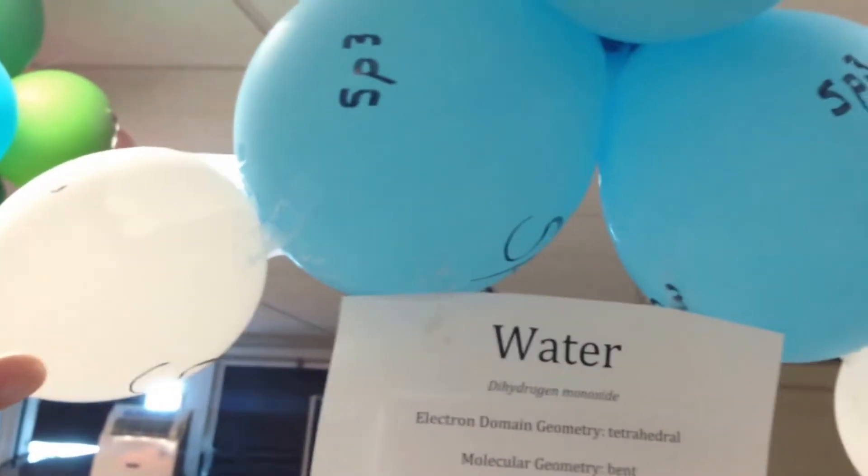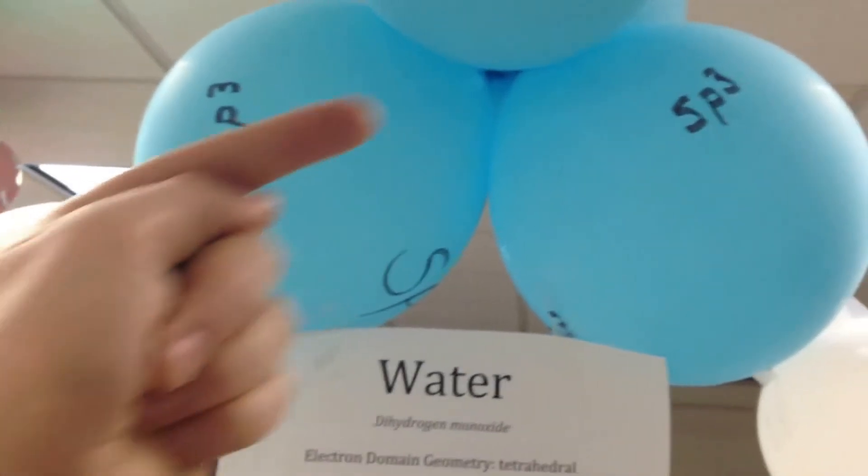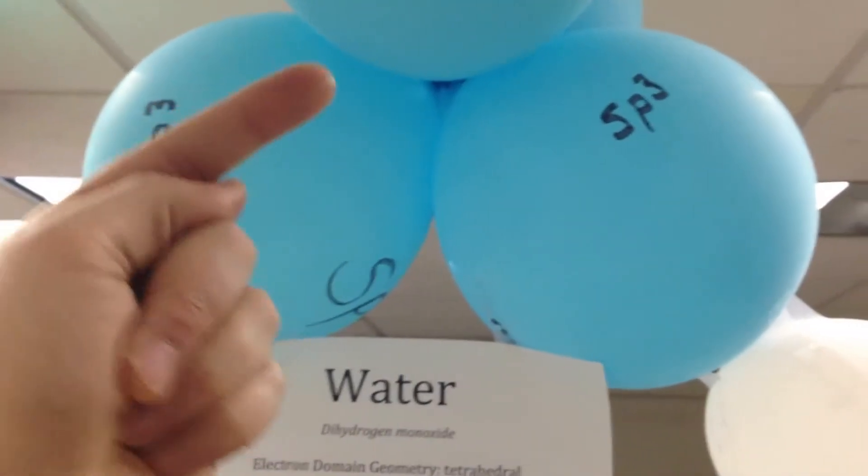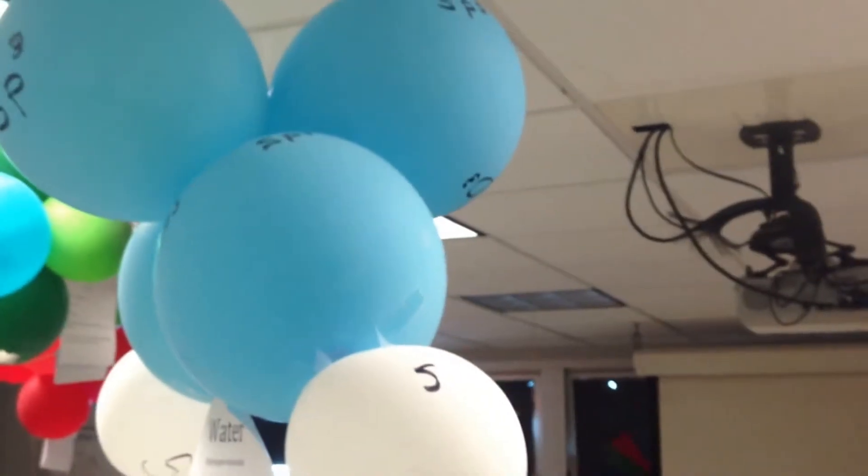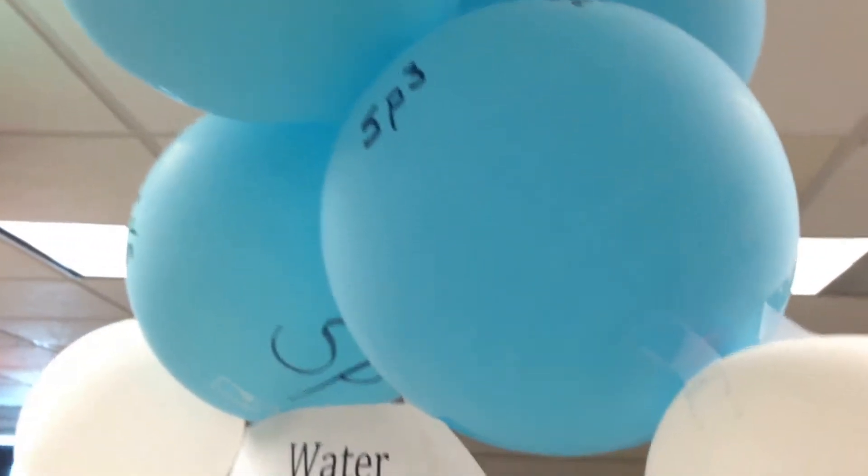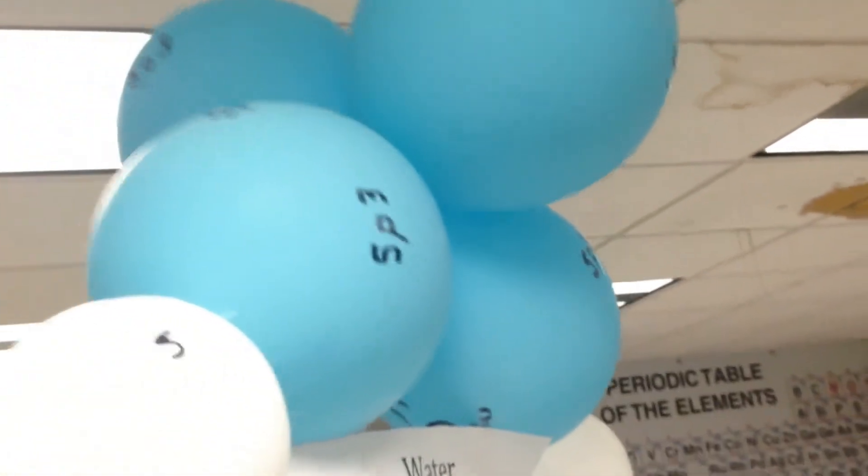If you're doing dipole moments, you'd have the positive part of the polar bond going up, and you'd have two dipole moments. The overall dipole moment goes up, and there's your polar molecule. And because of that bent shape, water is polar. It has a positive and negative end to it.